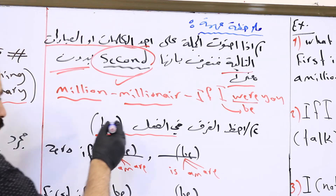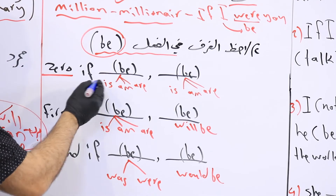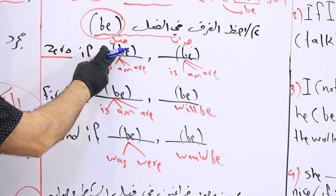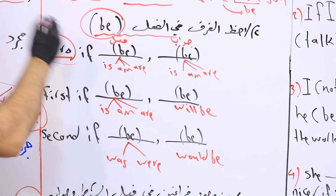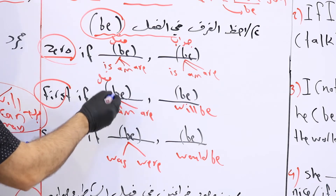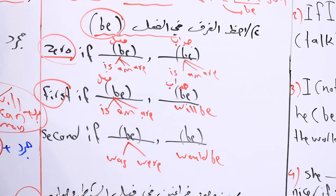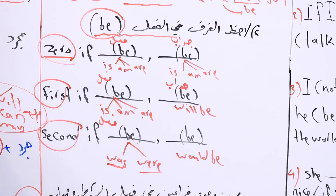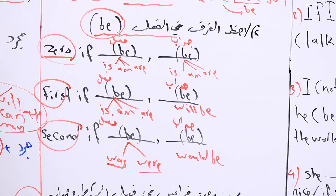Some students get confused with the verb 'be'. Here is a table: In zero conditional, 'be' in the if-clause becomes is/am/are, and in the result clause also is/am/are. In first conditional, 'be' in the if-clause is is/am/are, but in the result clause becomes 'will be'. In second conditional, 'be' in the if-clause becomes was/were, and in the result clause becomes 'would be'.